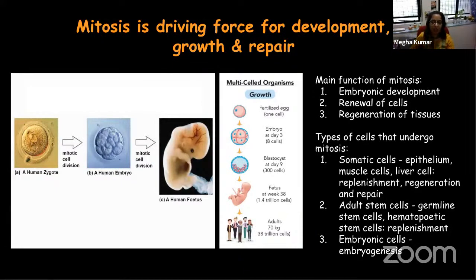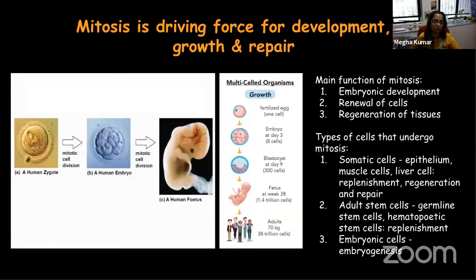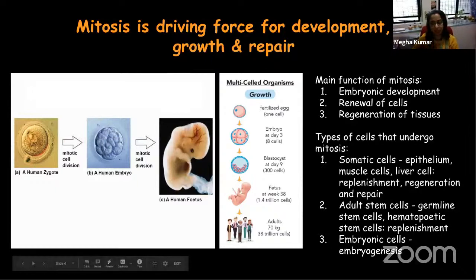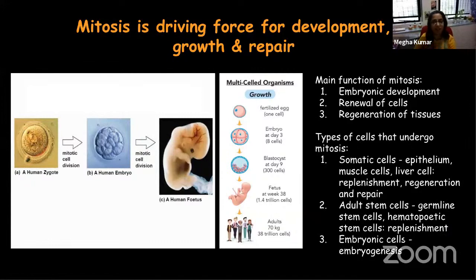What kind of cells undergo mitosis? In our body, somatic cells — cells like muscle cells and liver cells — undergo mitosis even when we are adults for replenishment, regeneration, or repair. In certain cases, we also have stem cells in adults which are important for producing the germline, the ovum and sperm cells. Then there are hematopoietic stem cells which produce blood cells and are critical for replenishment. The embryonic cells also undergo mitosis to form the embryo and fetus at later stages.